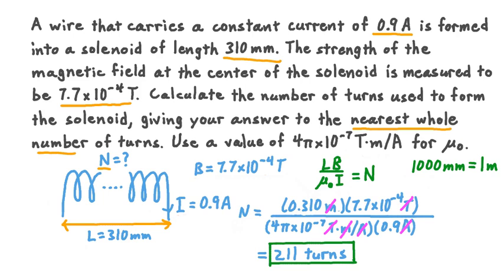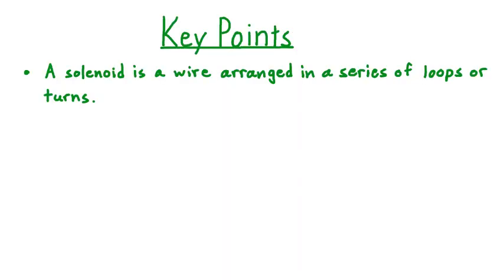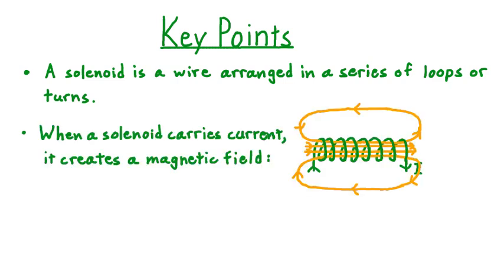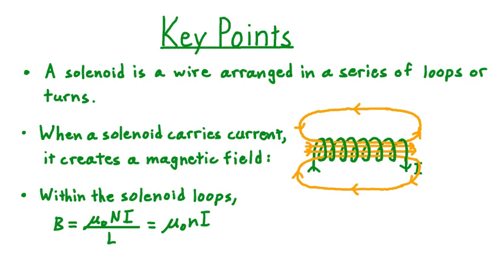Let's summarize what we've learned about the magnetic field due to a current in a solenoid. A solenoid is a wire arranged in a series of loops or turns. When a solenoid carries an electric current, it creates a magnetic field that is essentially constant within the loops, while outside those loops the field is much weaker and of varying direction. Within the loops, the strength B is given by mu-naught times N times I divided by L, which equals mu-naught times lowercase n times I, where lowercase n is the turn density.